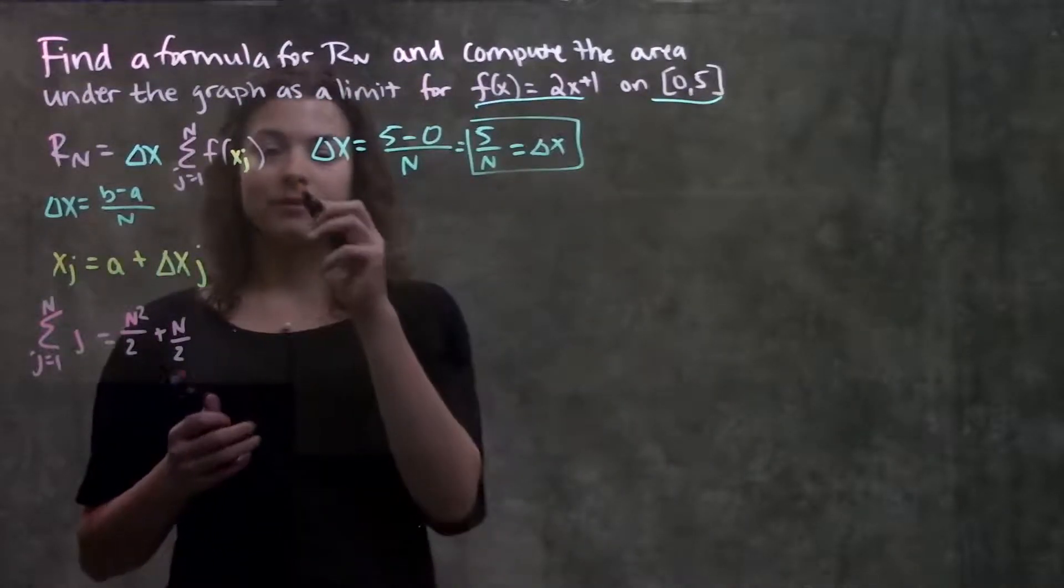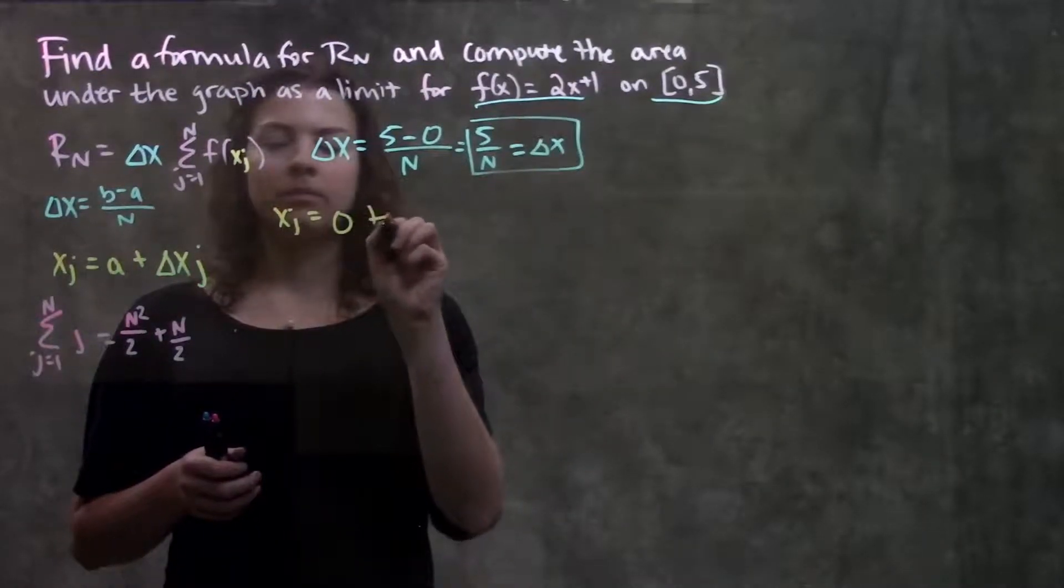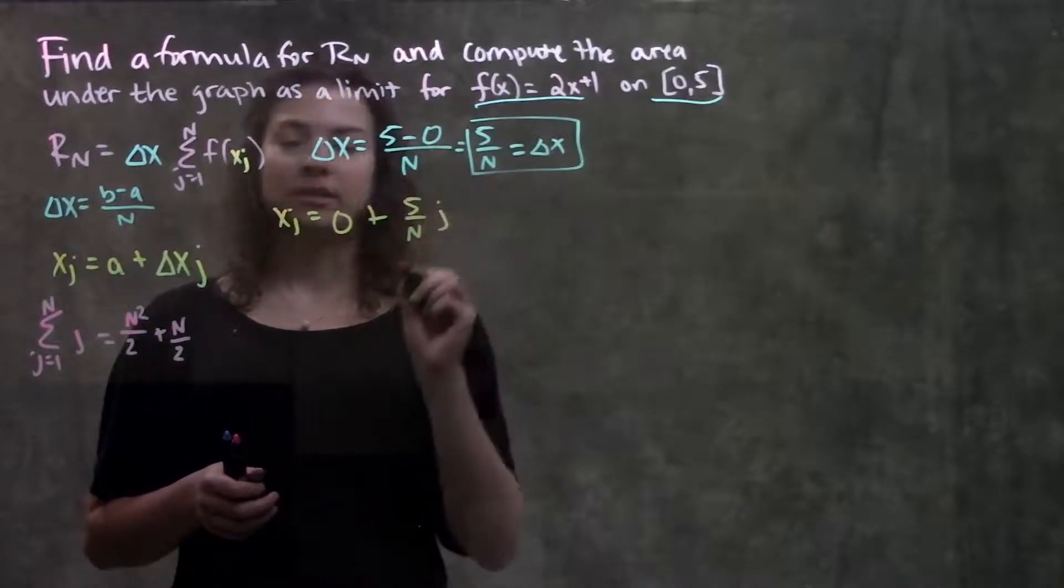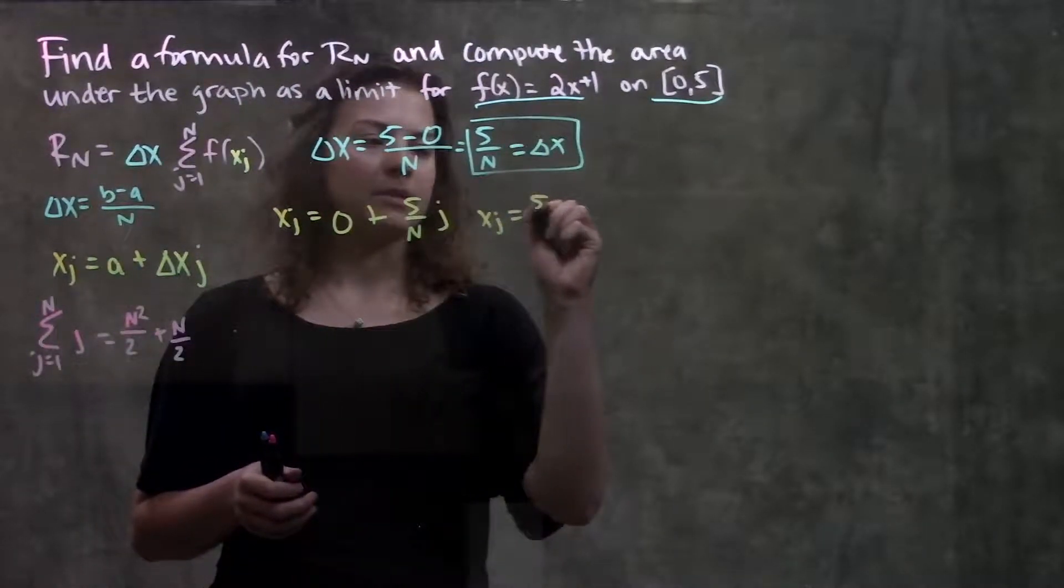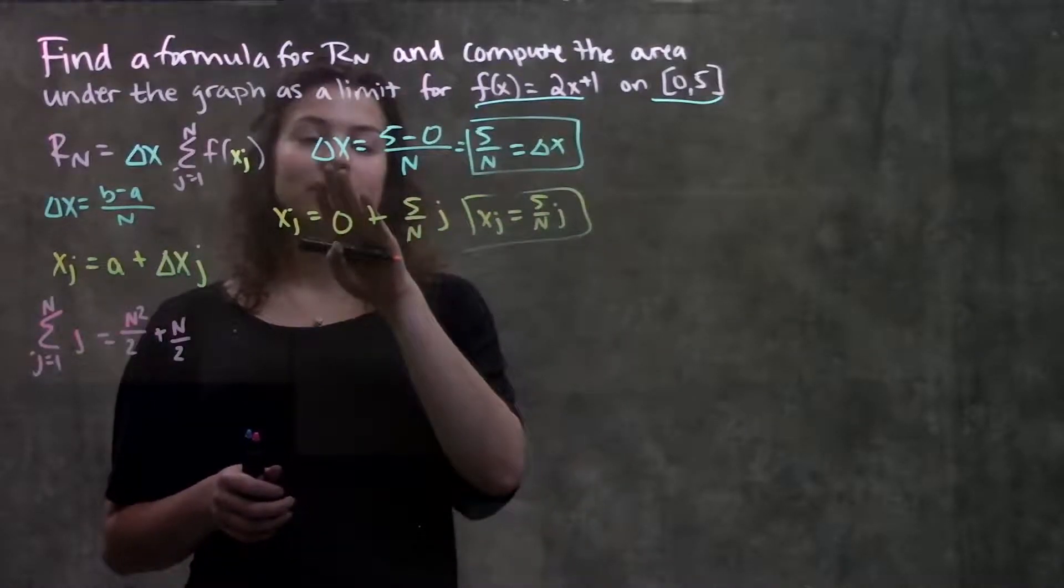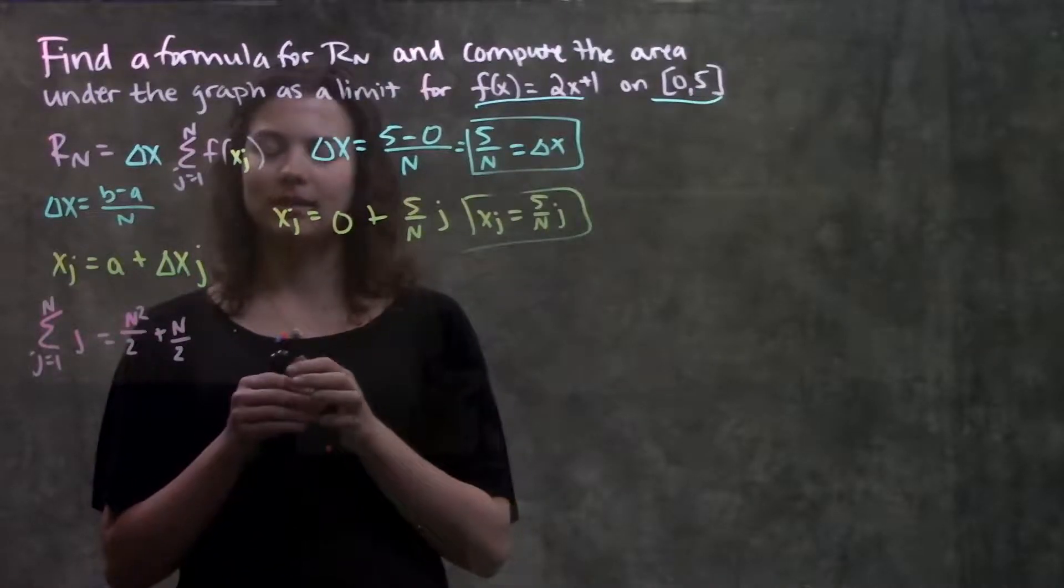So, plugging in all of our values to find our x sub j, we get that our a is 0, plus delta x we said was 5 over n, and just leave the j there. So, our x sub j becomes 5 over n times j. Okay, we have our delta x, we have our x sub j, we're just going to plug that into this formula here, and see what we get.